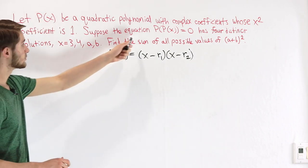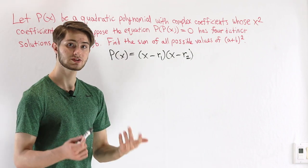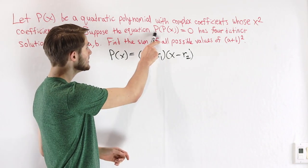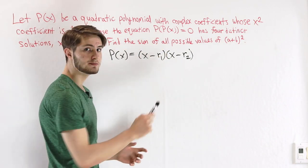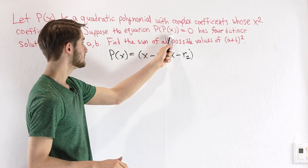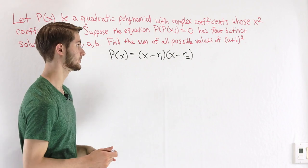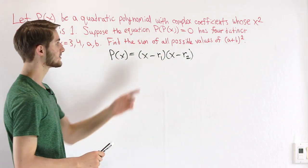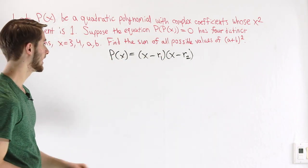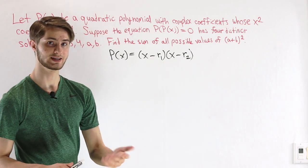We're looking at the equation p of p of x equals 0. We're taking p of some input and getting 0, which means that this input p of x has to be one of the roots of the polynomial. So p of x for these solutions has to be either r1 or r2.